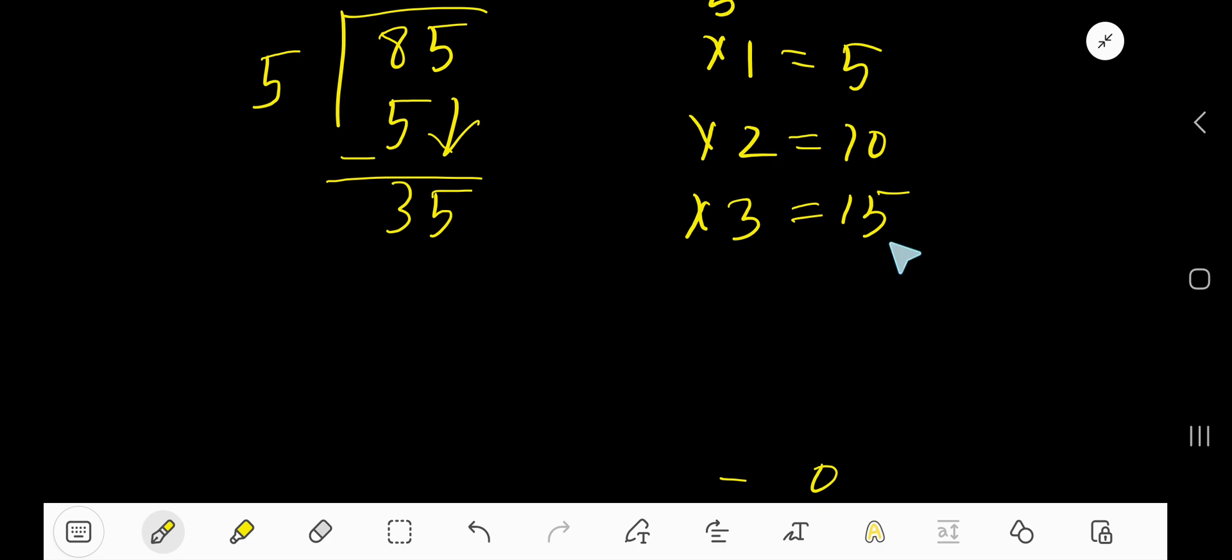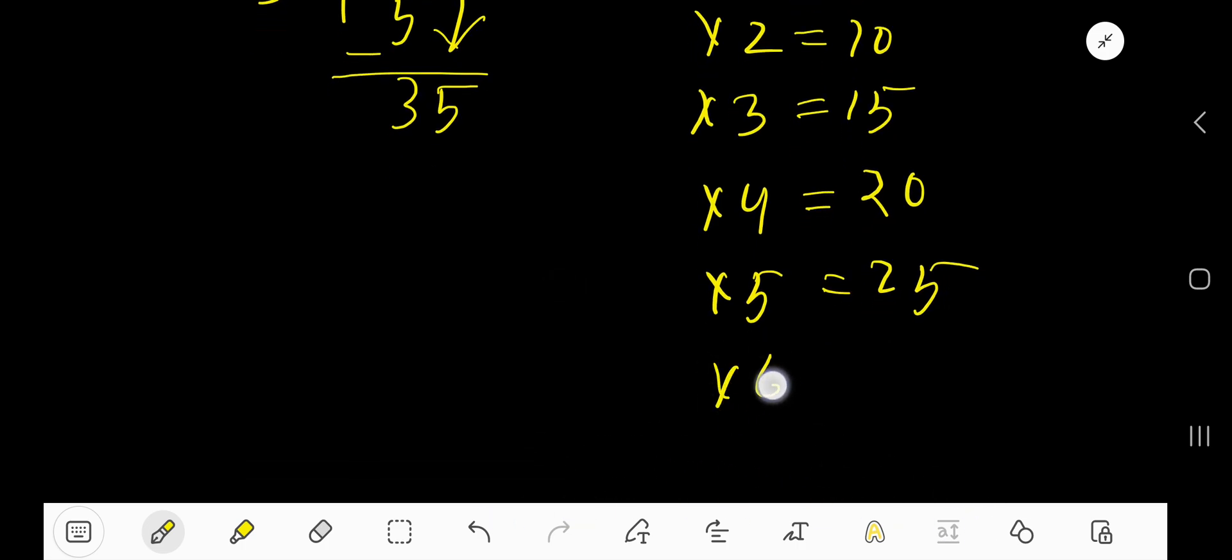5 goes into 35 how many times? We've written up to 15, so let's continue. Just add 5: 20. Just add 5: 25, then 30. 5 times 7, just add 5: 35. 5 times 7 is 35.